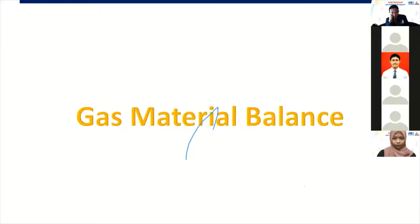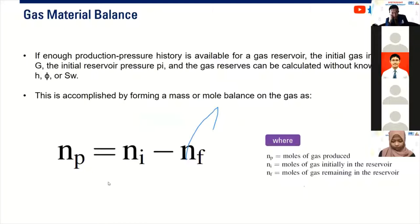The gas-material balance is quite simple. We do mole balance here. NP is mole of gas produced, NI is mole of gas initially, and NF is moles of gas remaining, or you can also call P for produce, I for initial, F for final. So NP is NI subtracted by NF.